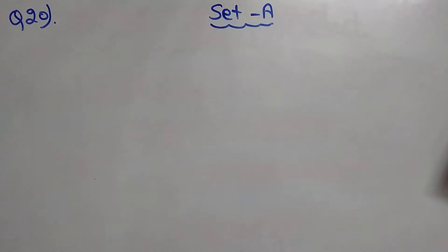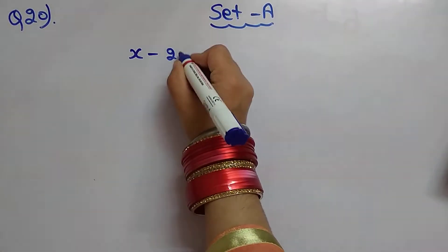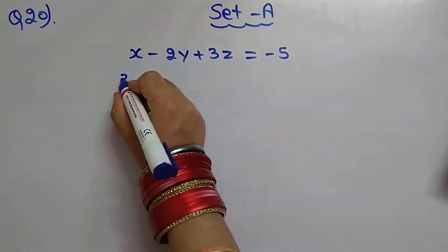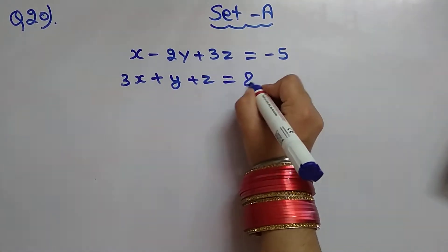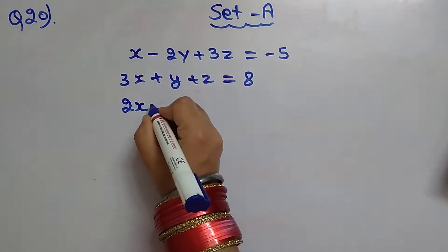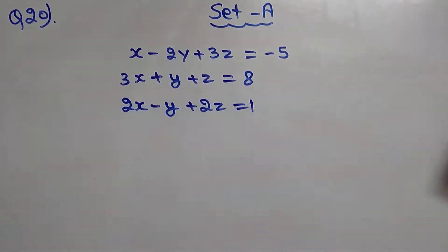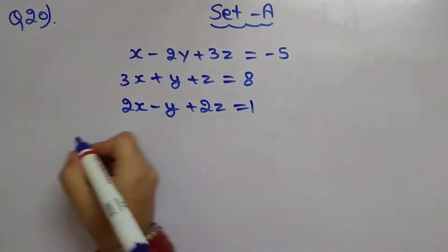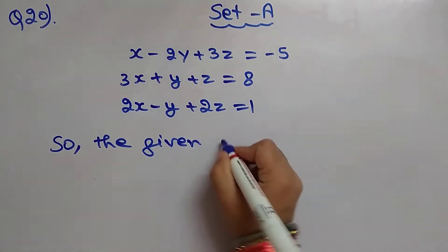Our first question is: solve the following system of linear equations by matrix method. The equations are: x minus 2y plus 3z equals negative 5, and 3x plus y plus z equals 8, and 2x minus y plus 2z equals 1.